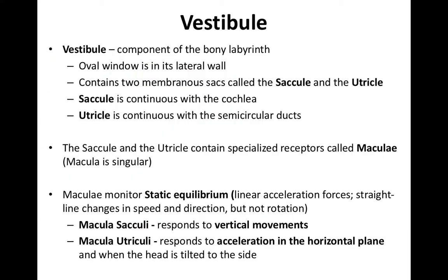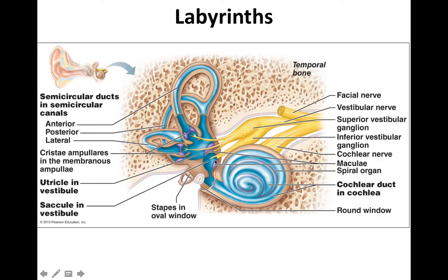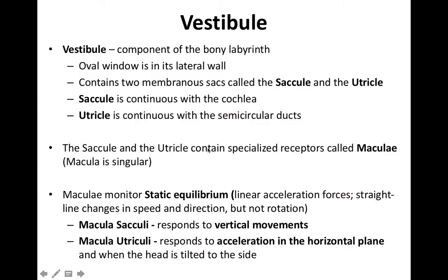Just like within the cochlea, there are specialized receptors in the utricle and saccule called maculae — macula being singular. Both maculae are responsible for monitoring static equilibrium, which is linear acceleration — up and down, forwards and backwards, side to side. These receptors adapt quickly to monitor the rate of change, so as you go from being still to moving slowly and then quickly, they track that change.